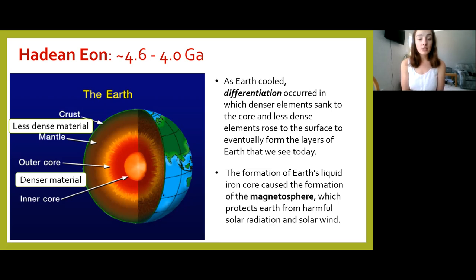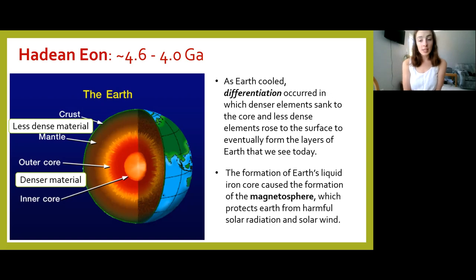Additionally, the formation of the liquid outer core — although still dense and iron-rich — caused the formation of a magnetosphere, which protects us from harmful solar radiation and solar wind.